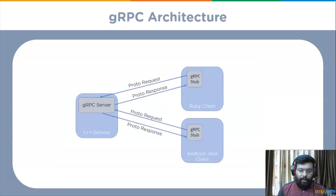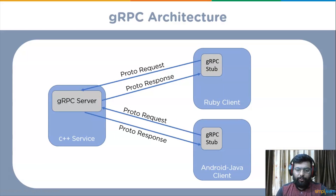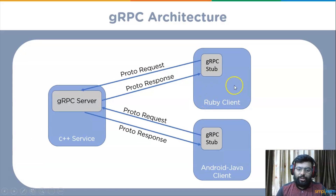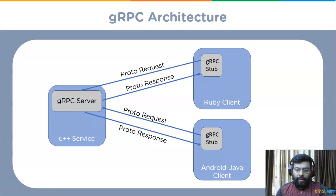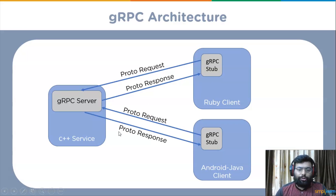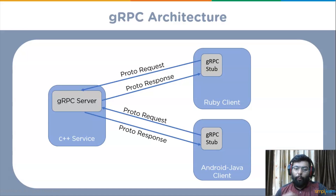Now we will understand the gRPC architecture. In the gRPC architecture diagram, we have the gRPC client and server sides. Every client and server has a gRPC stub. The gRPC client makes a local procedure call to the stub with parameters to be sent to the server. The client stub then serializes the parameters through the marshaling process using protobuf and forwards the request to the local client runtime library.